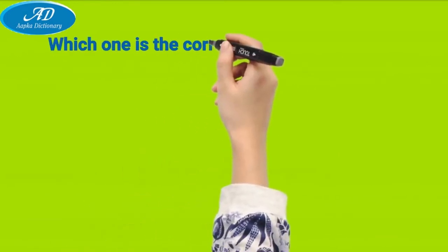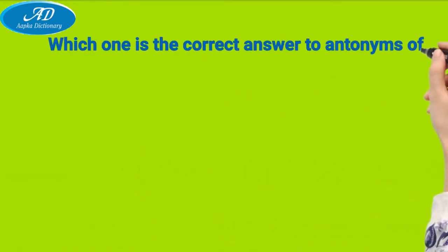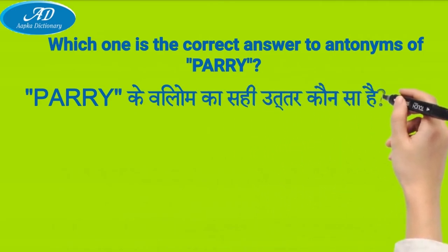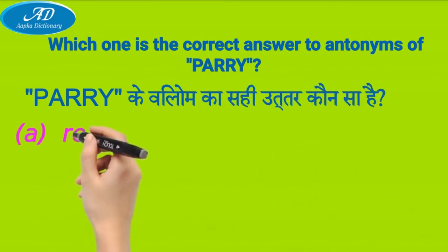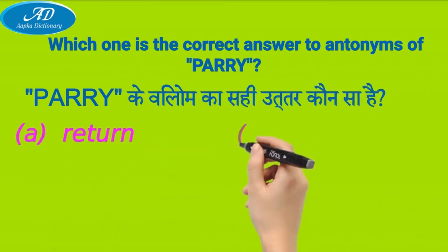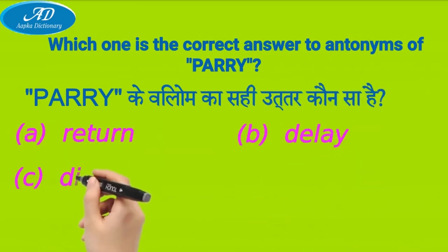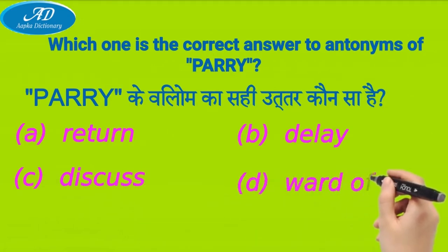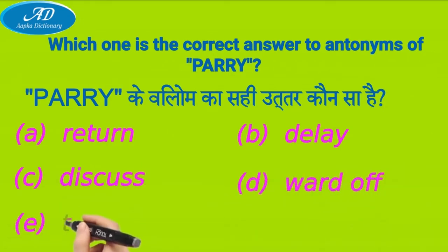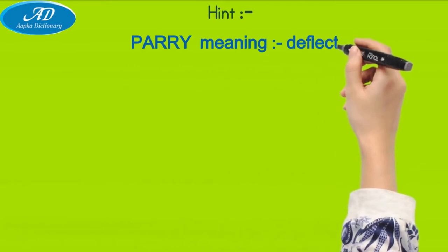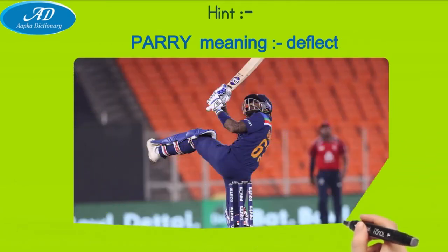Which one is the correct answer to antonyms of Pari? Pari ki vilomakar sahiu tera kaunah sahai: A) return, B) delay, C) disgust, D) ward off, E) thrust. Hint: reclivity meaning — trend.